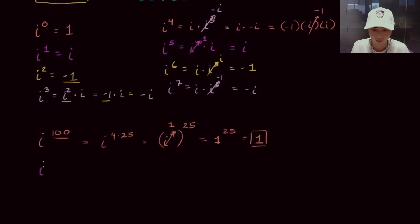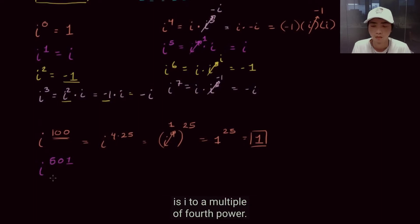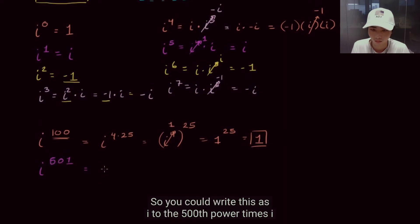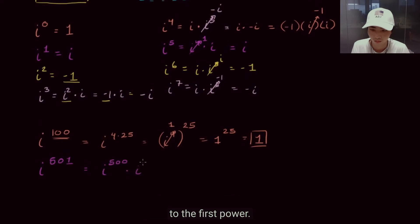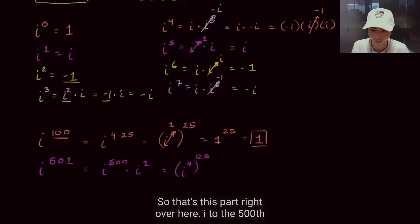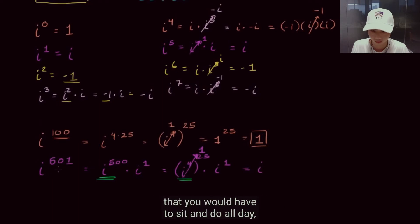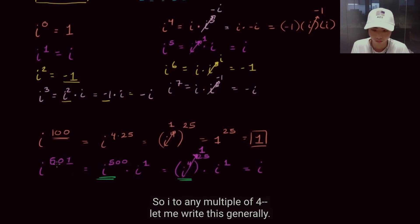Now let's try i to the 501st power. 501 is not a multiple of 4, but we can write it as a product: i to the 500th times i to the first. 500 is a multiple of 4, so i to the 500th equals i to the fourth raised to the 125th power, which is 1 to the 125th, which is 1. So i to the 501st is just 1 times i, which equals i. A seemingly daunting problem solved by using the cycling property.